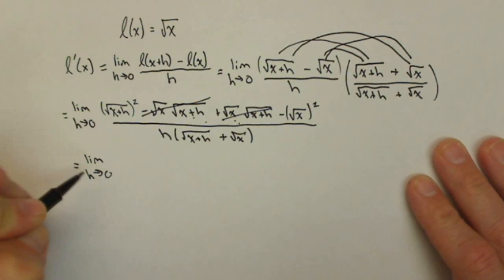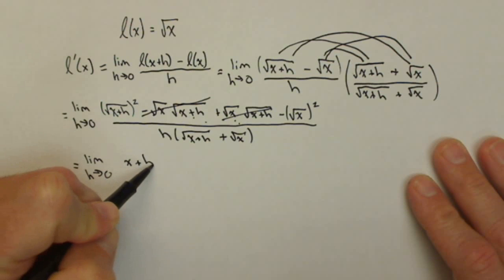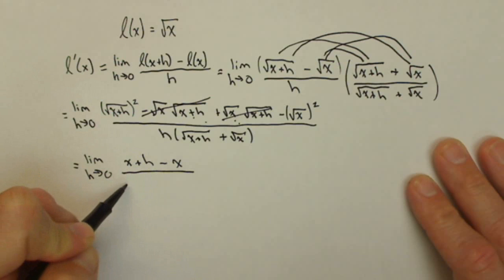And now the other thing that's going to happen, notice I got square root of x plus h squared. Those are essentially going to cancel. I'm going to end up with x plus h minus x on top. All the radicals are gone.